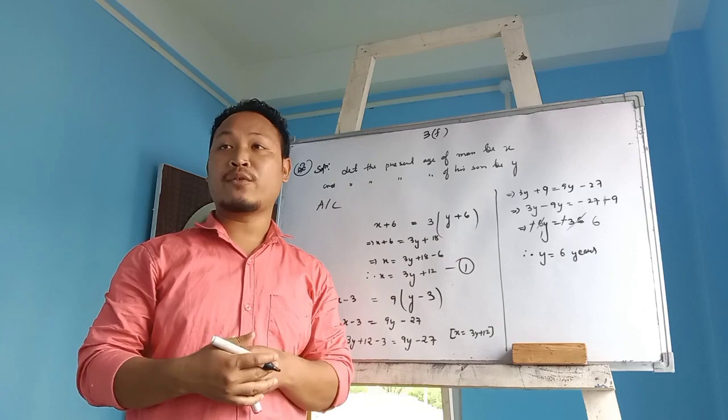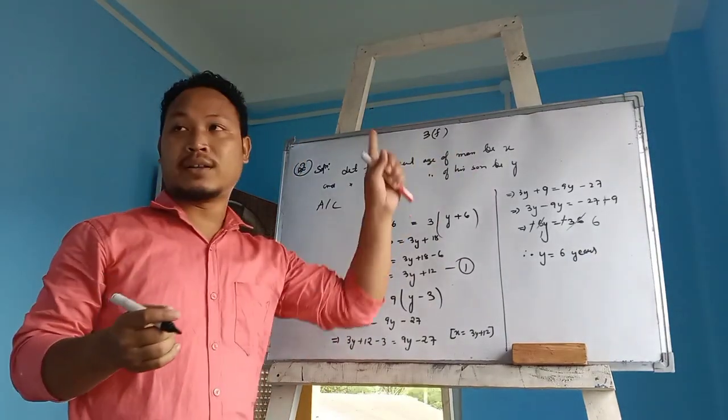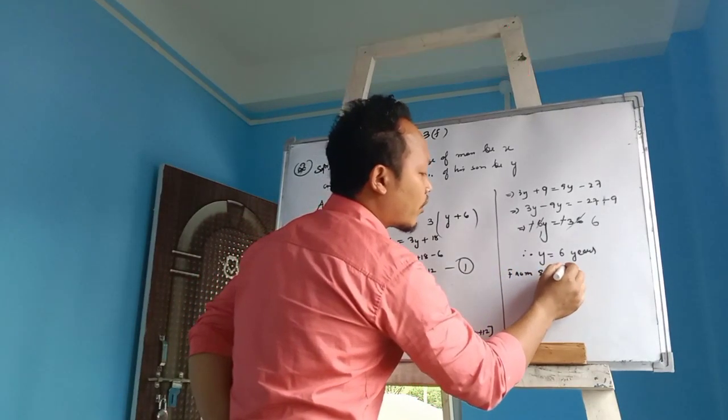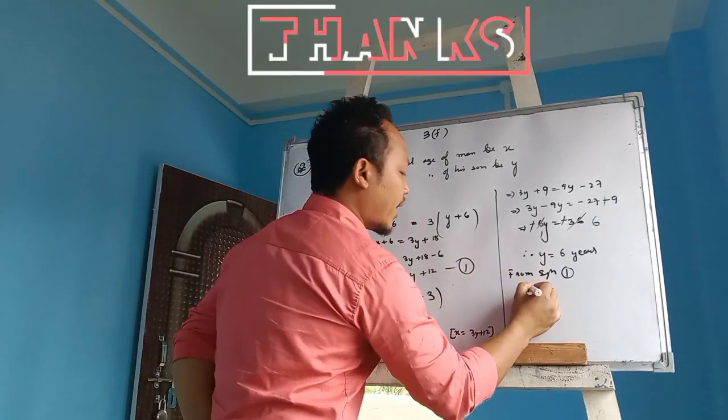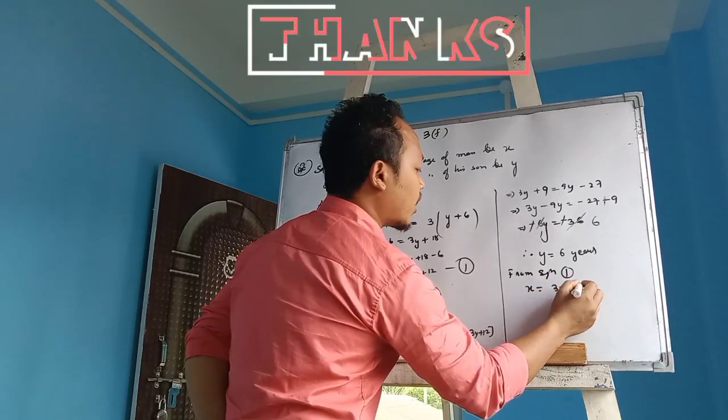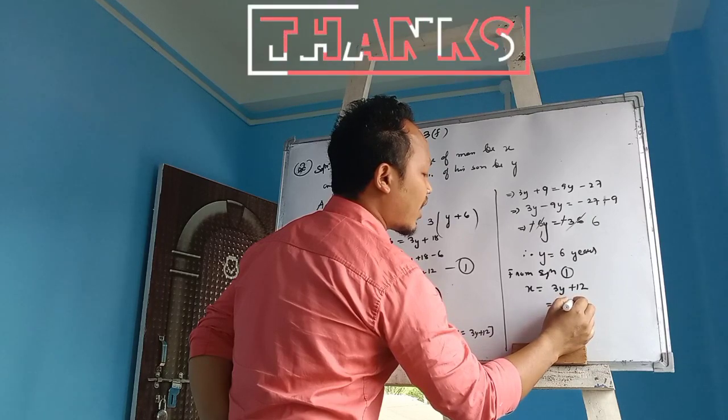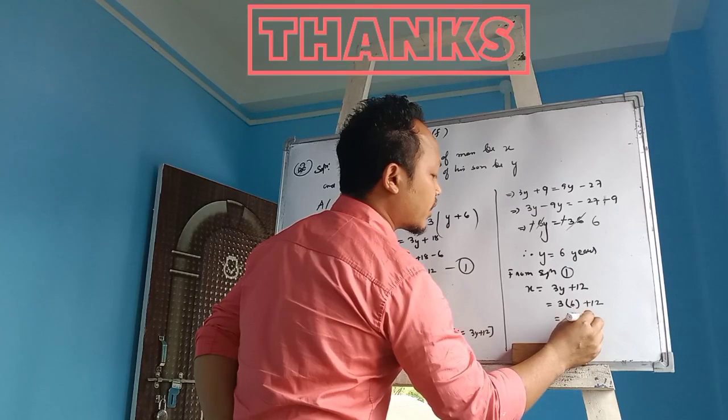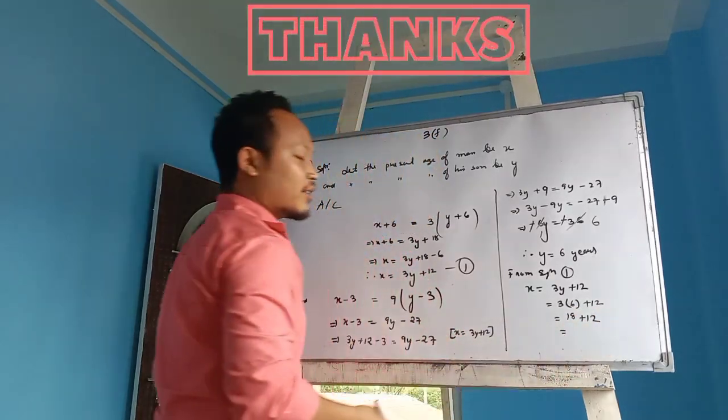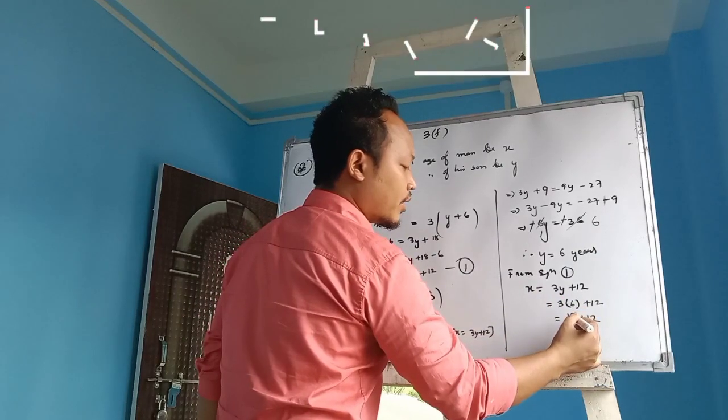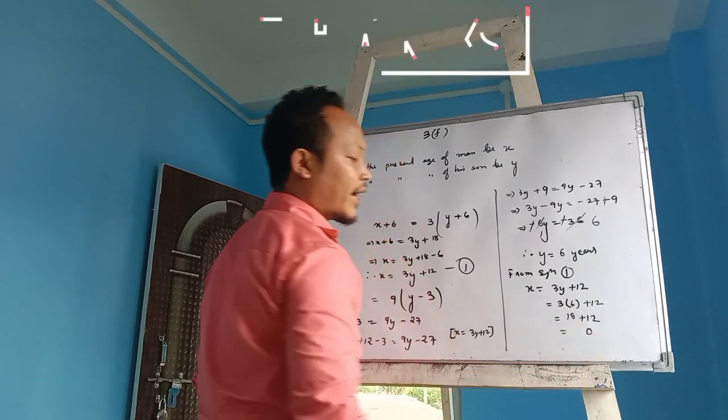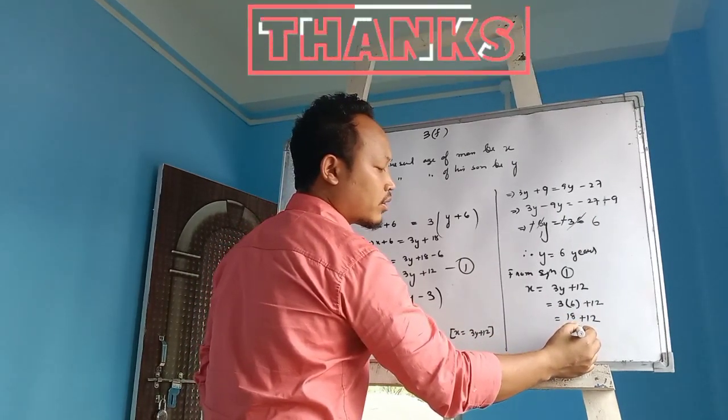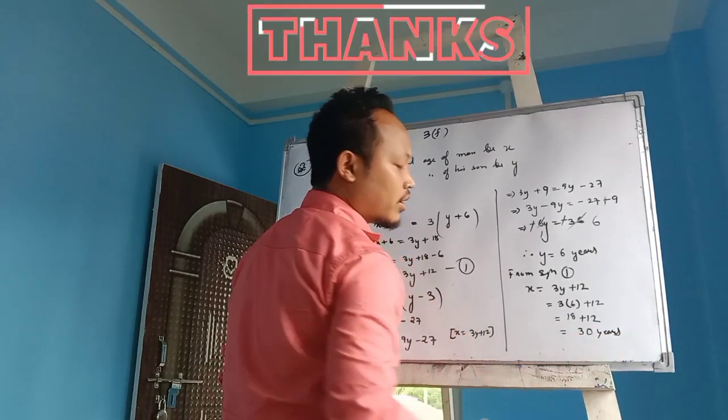Now I have to find the age of father from equation 1. What is equation 1? X equals 3y plus 12. So 3 times y, what is y? 6. Plus 12. 3 into 6 is 18 plus 12. So by counting, 18 plus 12 is 30.